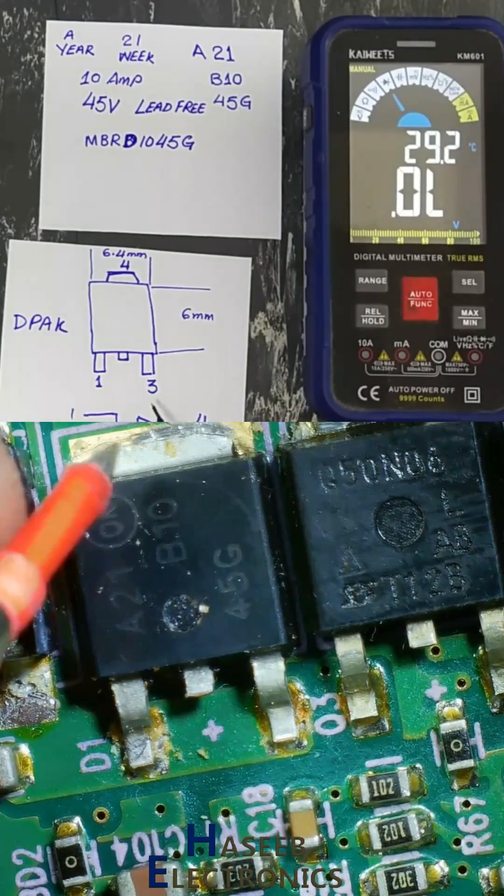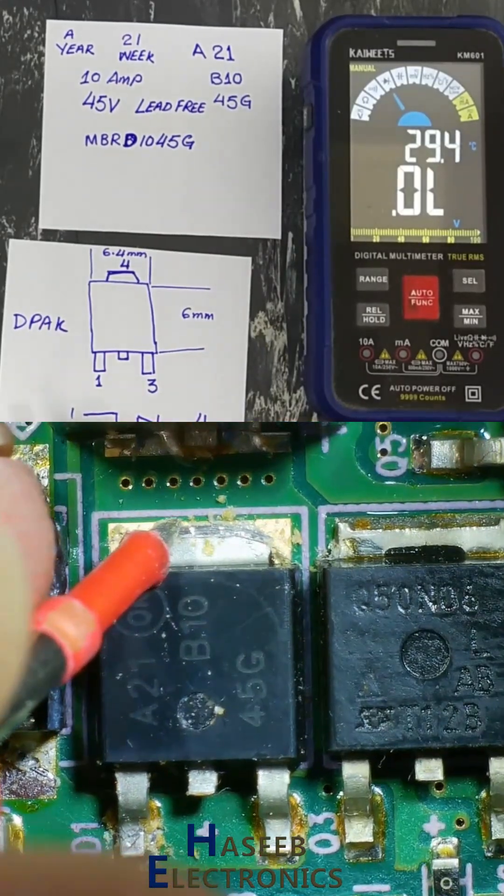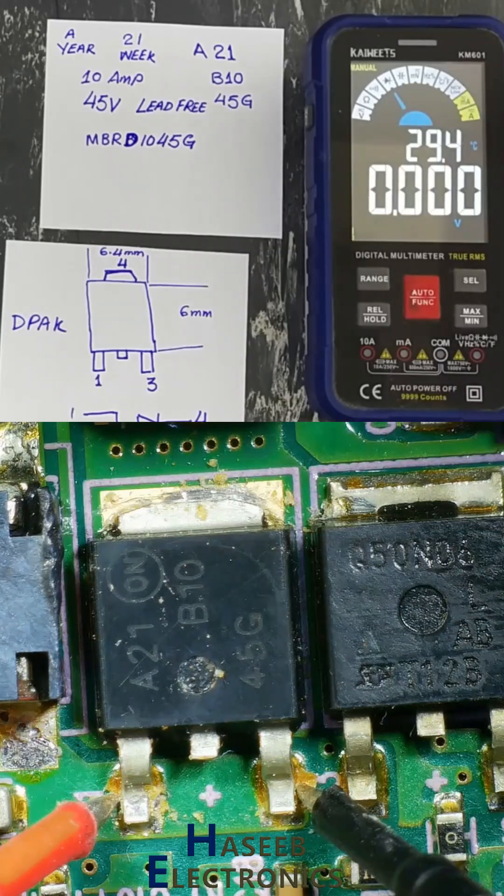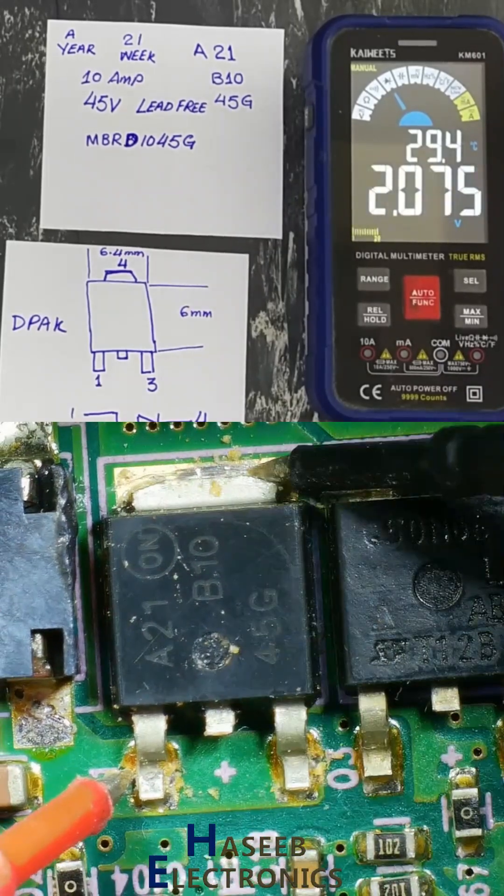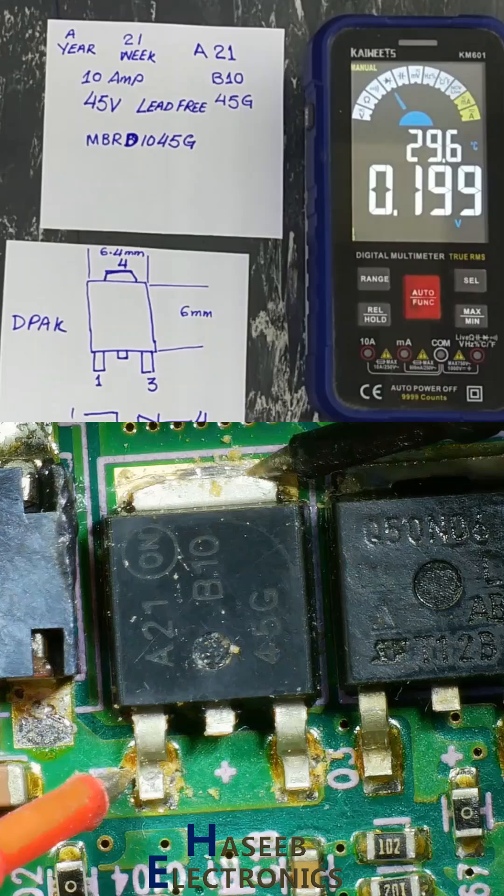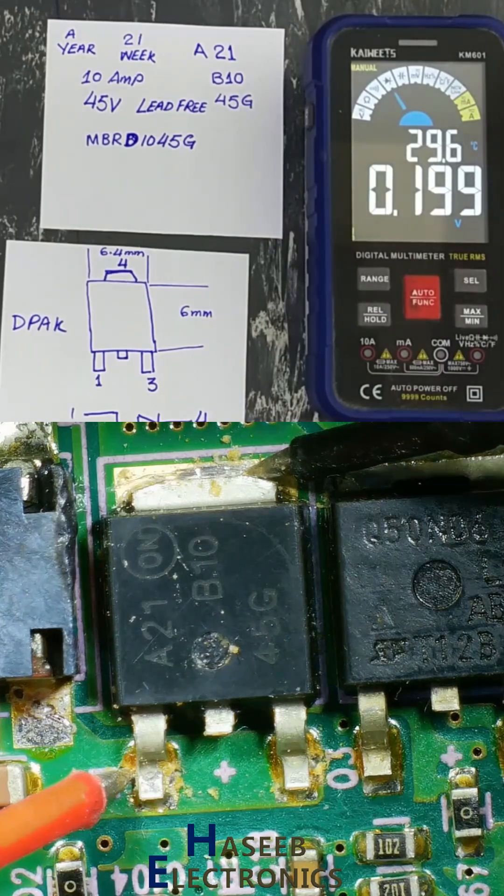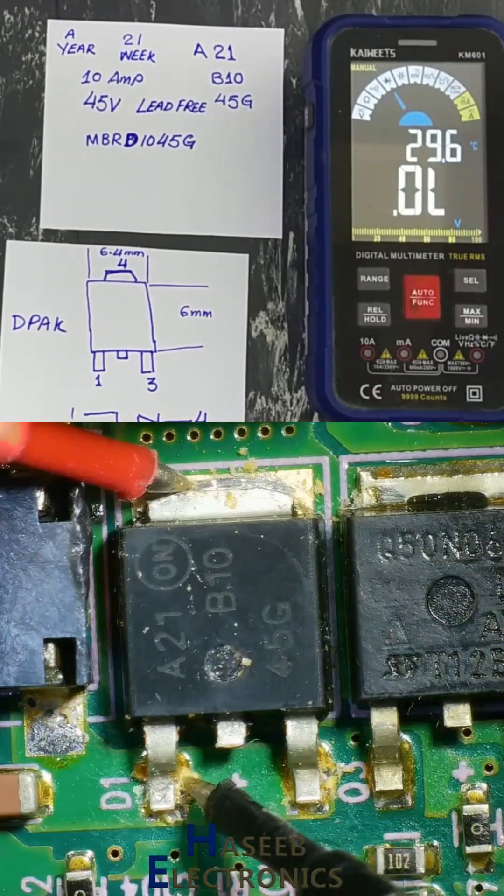Diode inside. Pin number four is tab. We are testing in diode mode. Pin number one and three are connected together. Pin number one and four, 0.2 volt because it is Schottky power rectifier. Reverse the leads, open circuit. This diode is good.